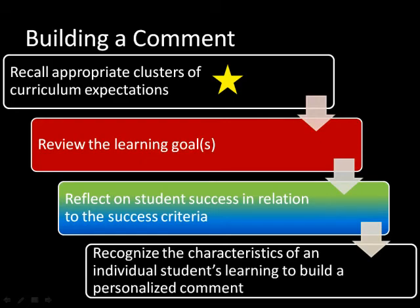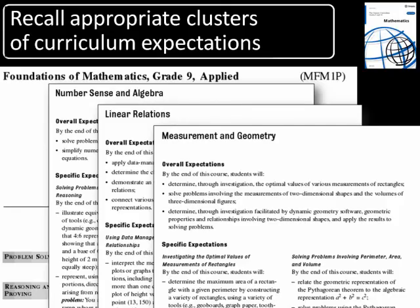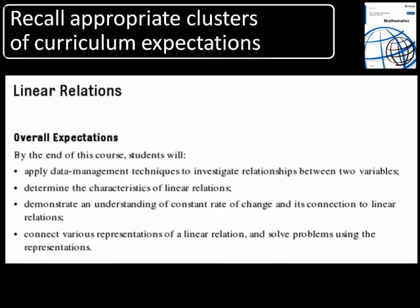We begin the process of building a comment by recalling key learning linked to a cluster of curriculum expectations that best reflect a specific student's performance. We are building a sample comment that focuses on one particular student's achievement in Grade 9 Applied Mathematics. Teachers are encouraged to consider which strand and cluster of expectations best reflects this individual student's achievement. Linear relations best reflects this student's performance throughout this assessment period. Within the linear relations strand, there are four overall expectations, and in this example, 'determine the characteristics of linear relations' is the overall expectation that leads to the development of a learning goal.